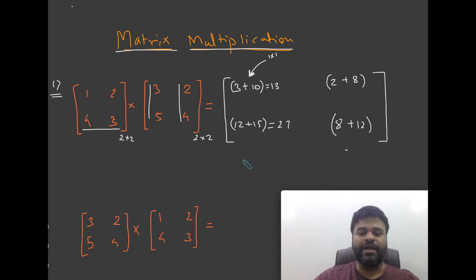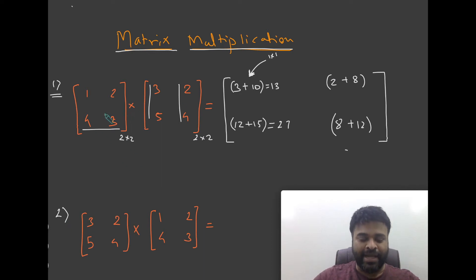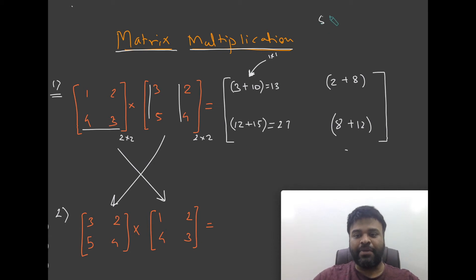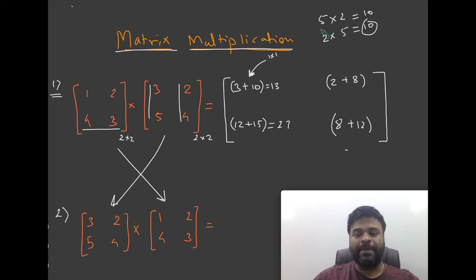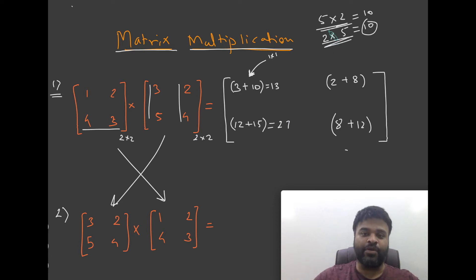This was a simple first example. Now we move on to the second example, which is literally the same except I've switched the matrices — this matrix comes here and this one goes there. Usually when you multiply numbers, the order doesn't matter — multiplication is commutative. But in matrix multiplication it is not exactly the same, and we'll see how that works.